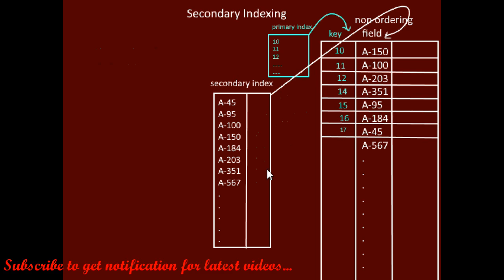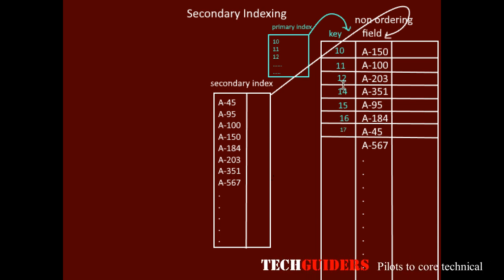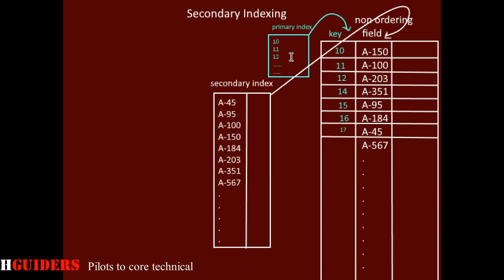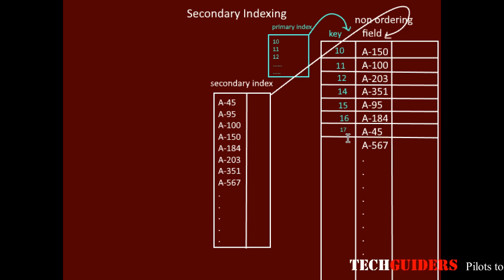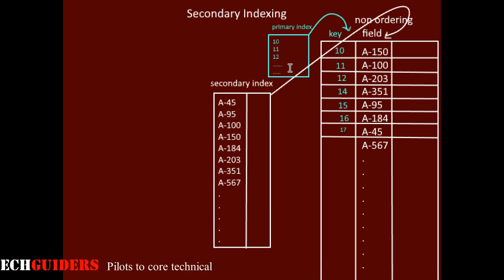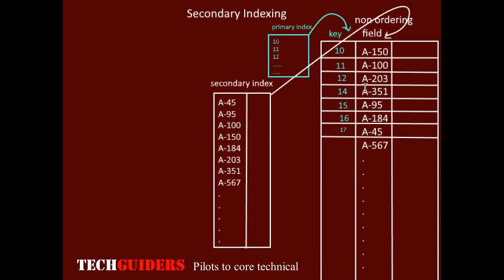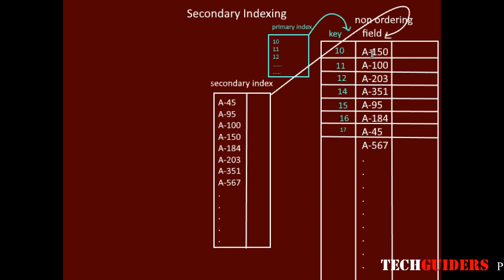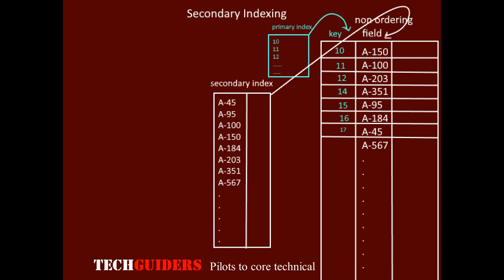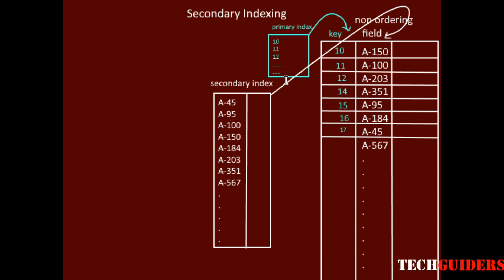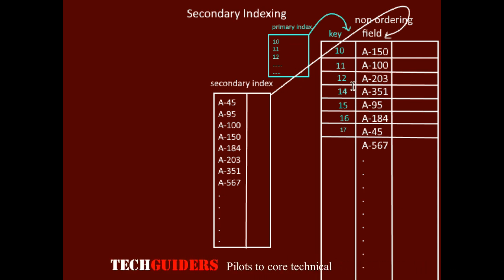Why is it called a secondary index? Sometimes the file may already be sorted according to its primary key and a primary index may already exist on it, or it may be sorted on some non-key field and a clustering index may exist on it. So some primary access method already exists. If there are more frequent queries on some other field on which the file is unordered, we can create a secondary index based on that non-ordering field for fast retrieval of records.